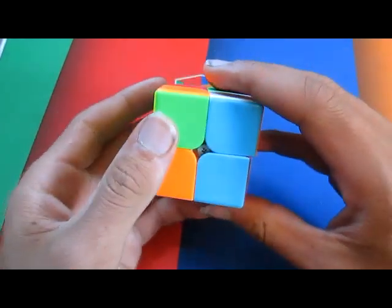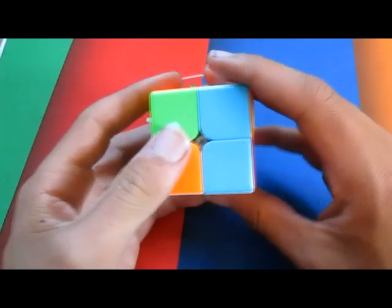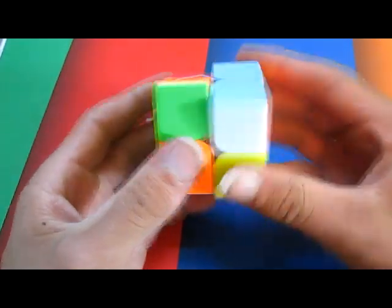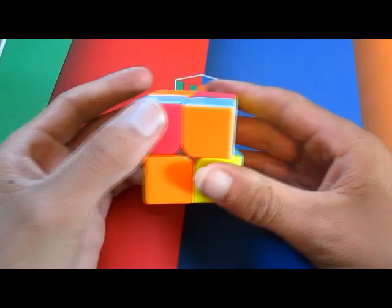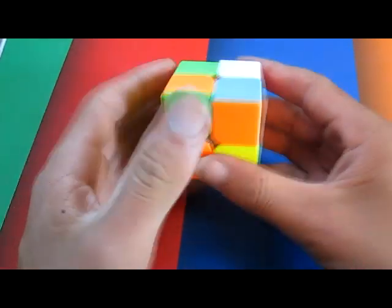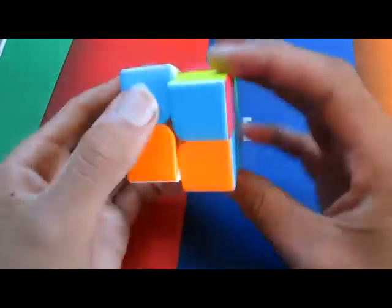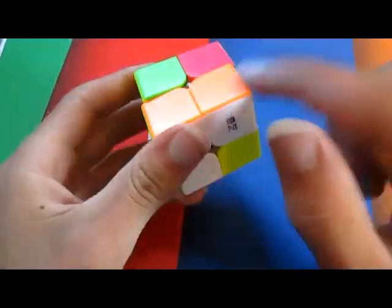We're going to need to memorize an algorithm to get this on the bottom. So this algorithm is right, up, right down, up back, and then do that three times. And it puts the piece right here.